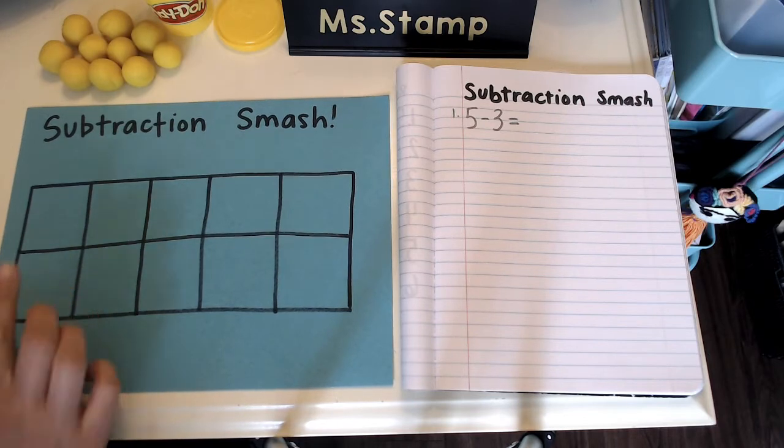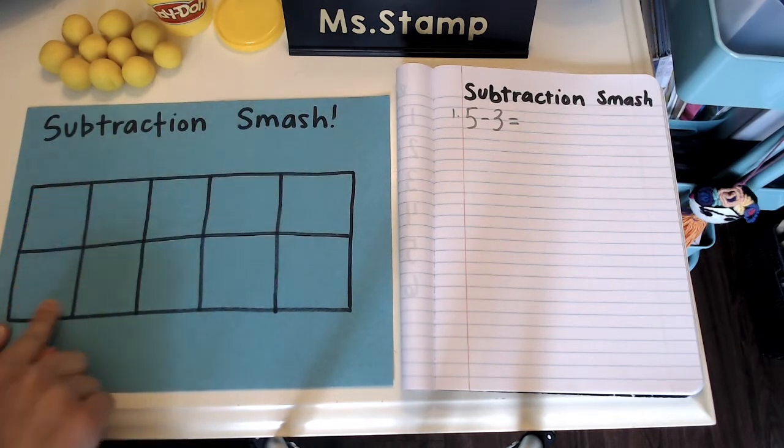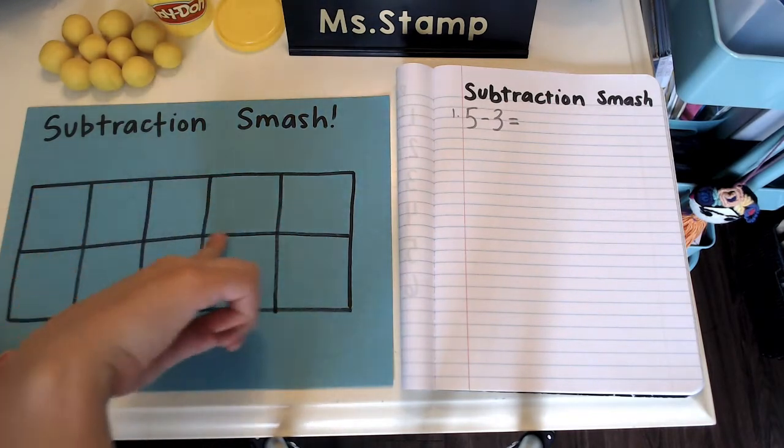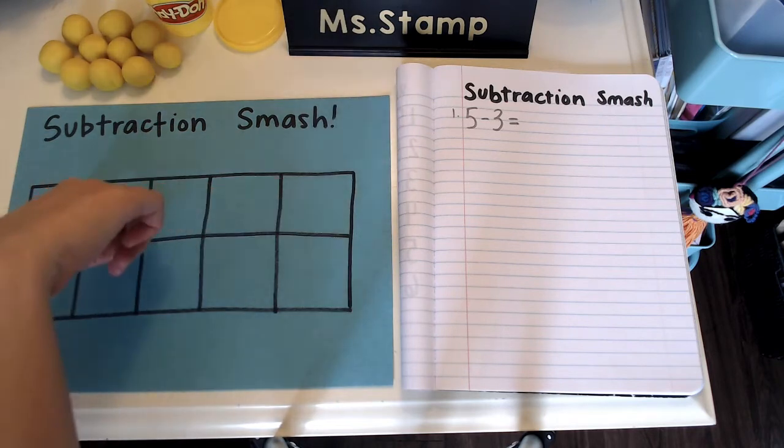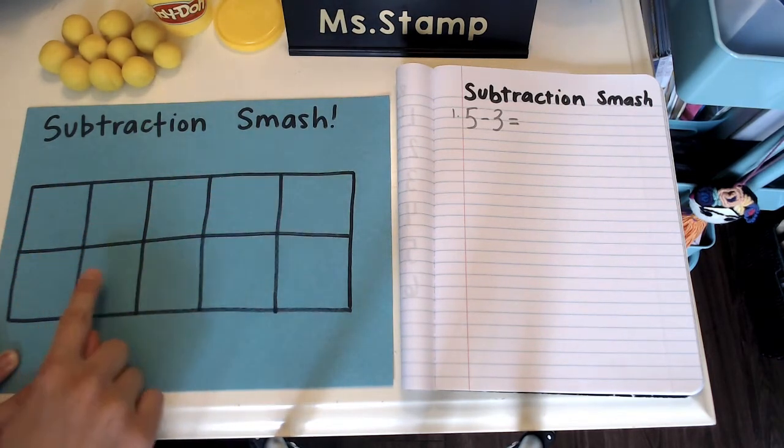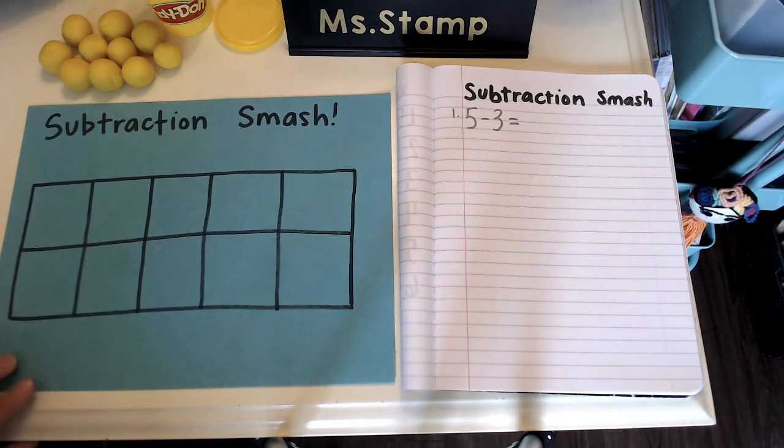When you have your mat, go ahead and write at the top subtraction smash. Then you need to make a 10 frame, so make a big rectangle, one line in the middle, and then four lines down to make a 10 frame with 10 spaces, 10 windows that we're going to use.